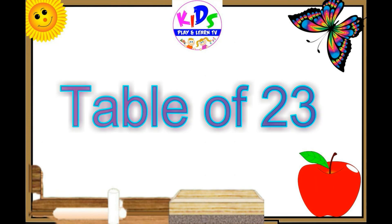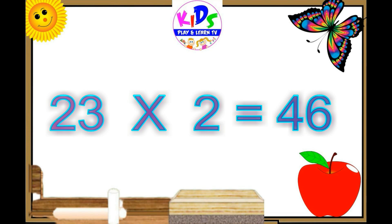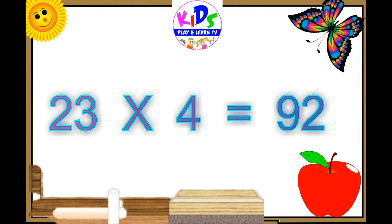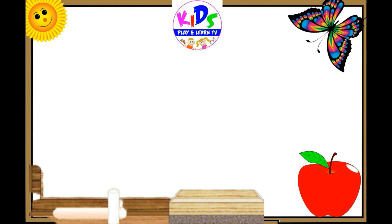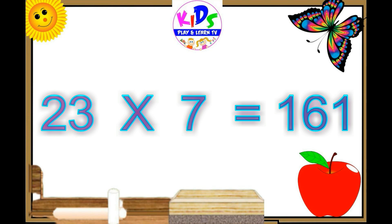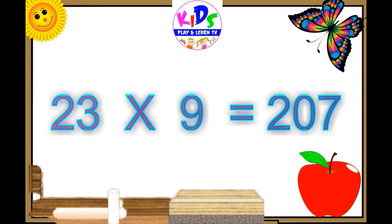Now, we will learn table of 23. 23 ones are 23, 23 twos are 46, 23 threes are 69, 23 fours are 92, 23 fives are 115, 23 sixes are 138, 23 sevens are 161, 23 eights are 184, 23 nines are 207.